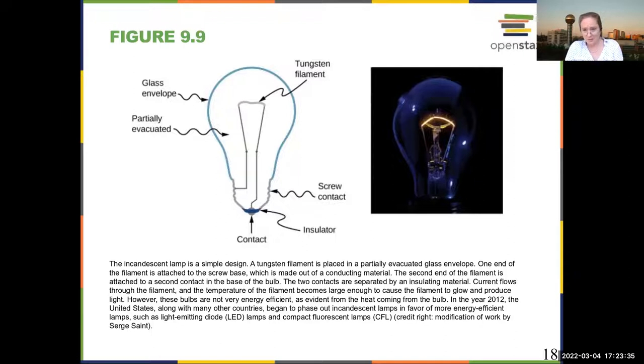A simple example of a resistor is an incandescent light bulb. What an incandescent light bulb is, is that it basically forces current through a wire. When you force current through a wire, the wire heats up and it provides light. It is partially evacuated so that you are less likely to get sparks.